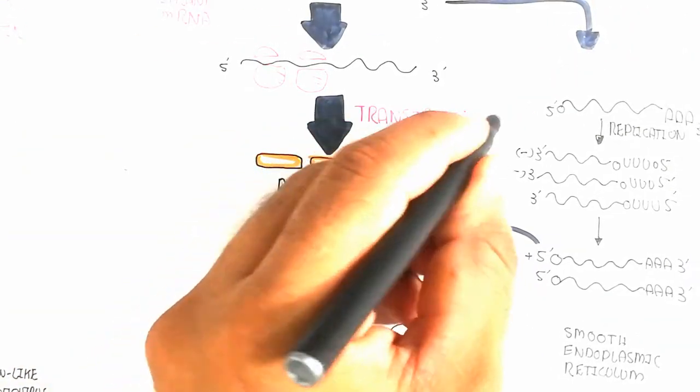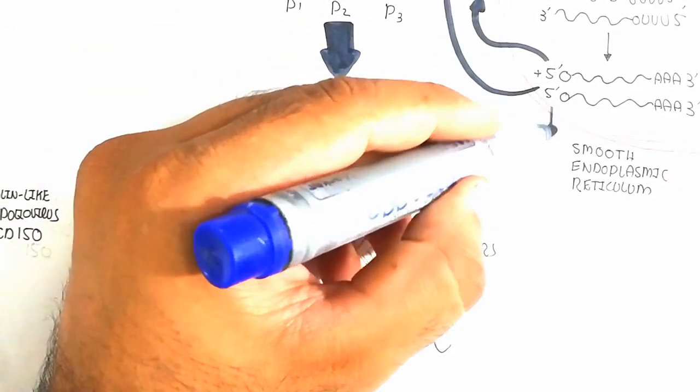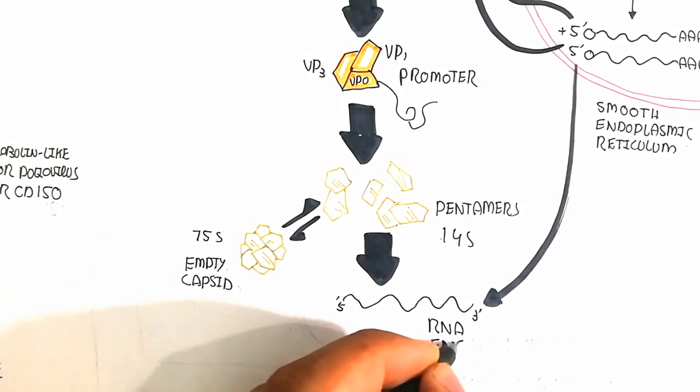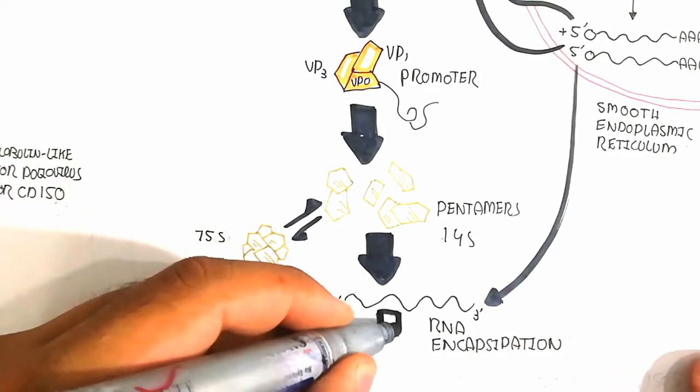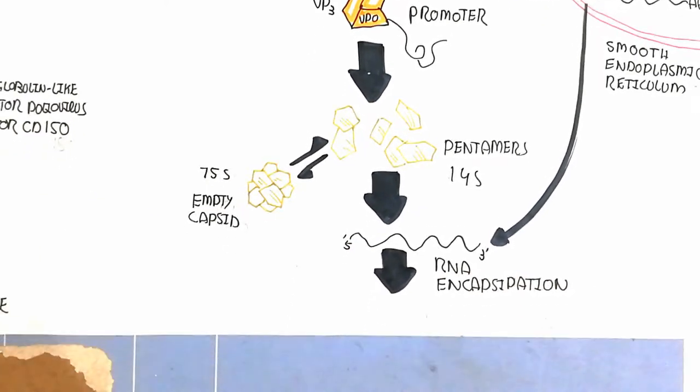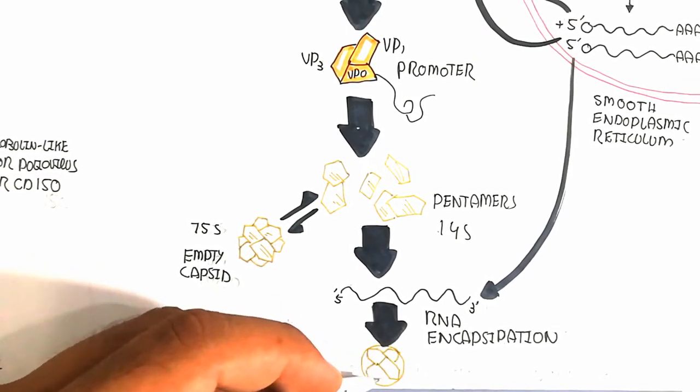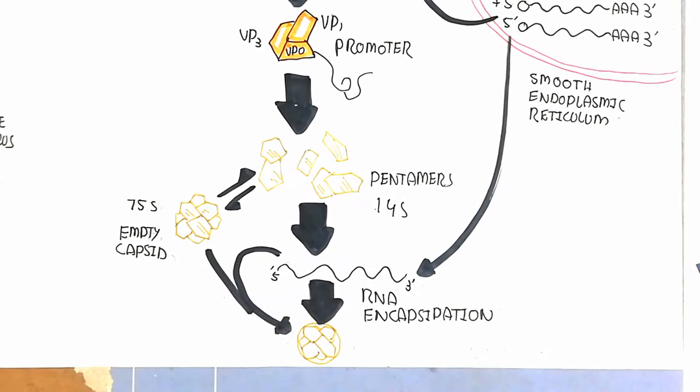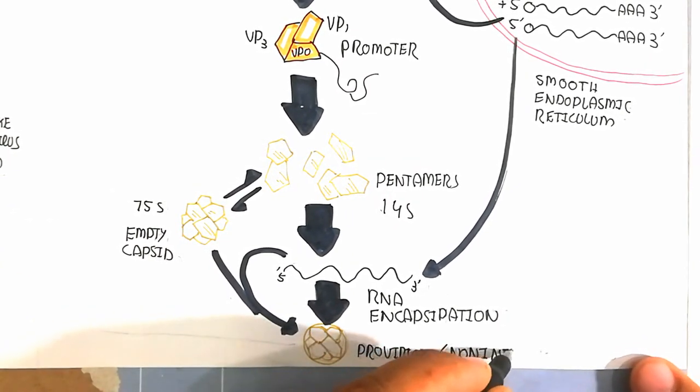Here is the RNA encapsidation which will capsidate. This will lead to combining with the RNA to form a complete mature virion. The provirion, the non-infectious 150S, will become an infectious particle. This is known as a virion.